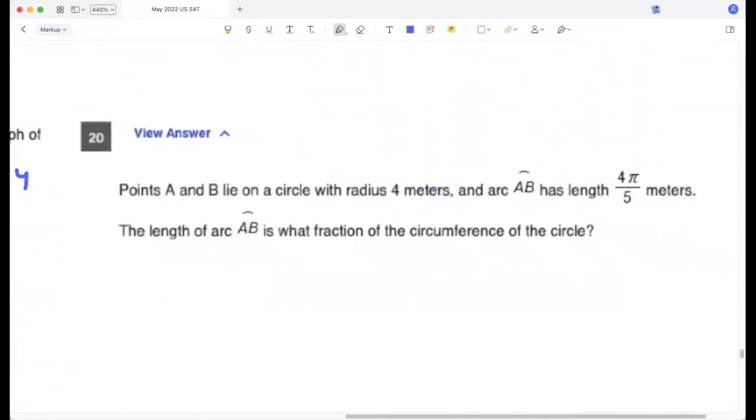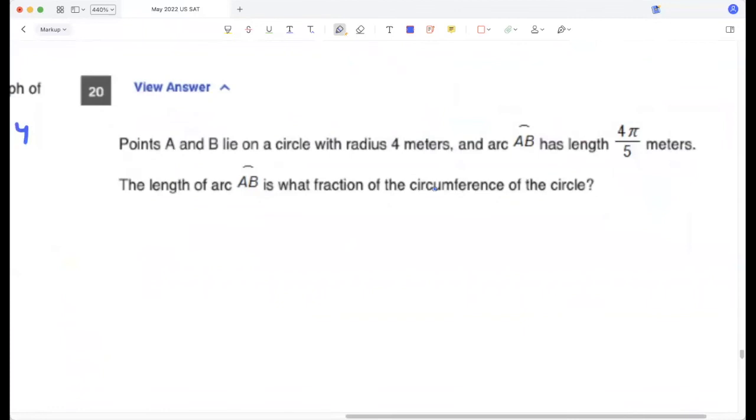Points A and B lie on a circle with radius 4 and arc AB has this length. Length of arc AB is what fraction of the circumference of the circle? Okay, so 4π/5 divided by 2πr, right? So that π and π cancels, 4 and 4 cancels, 1 by 10.